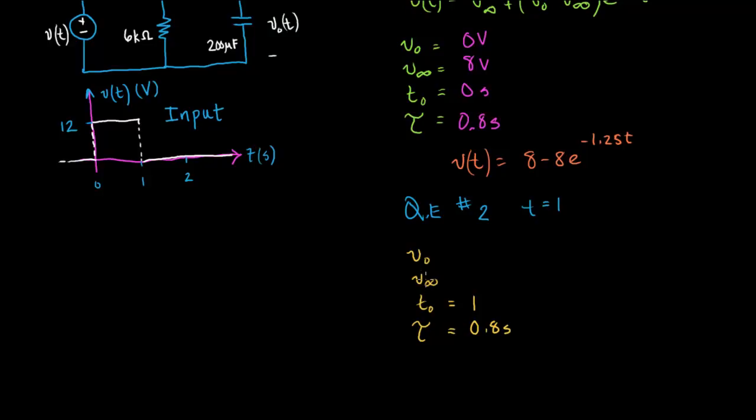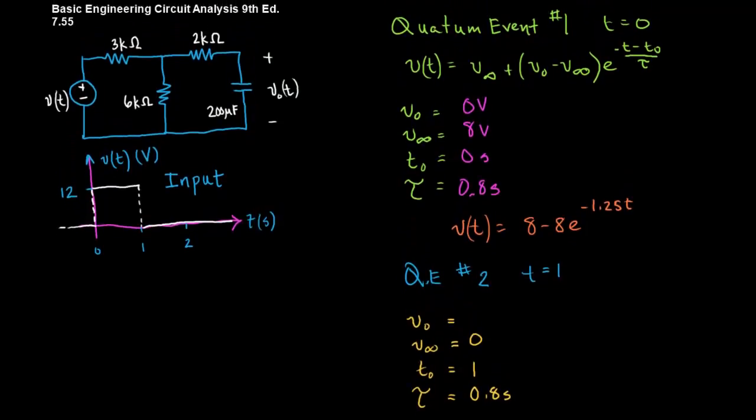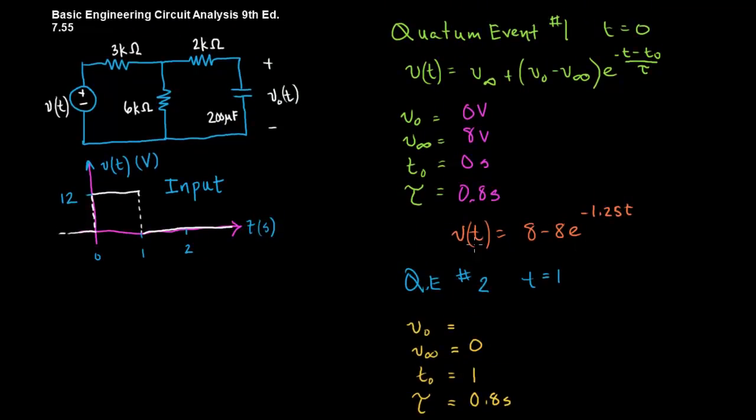V at infinity. So, the voltage gets switched off, and we want to know what happens to the voltage on the capacitor. Well, eventually it equals 0, right? How do we solve for V0? What happens at this quantum event T equals 1? Well, we know what happens because we just wrote an equation for it. So, it actually equals 8 minus 8E to the minus 1.25 T, where T equals 1. So, if you plug that into your calculator, you'll get 5.71 volts.